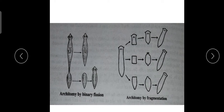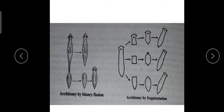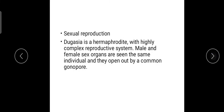So, architomy occurs by binary fission or by fragmentation, with each fragment undergoing restorative regeneration to form a new individual — this is called clonal reproduction, since it is asexual reproduction.